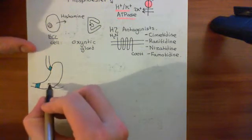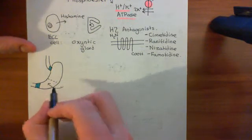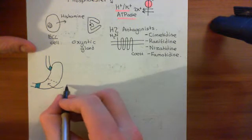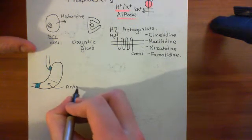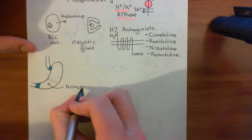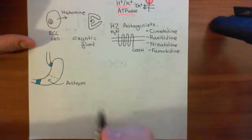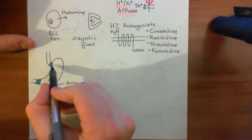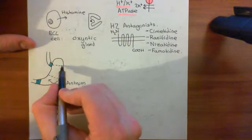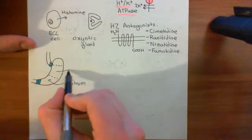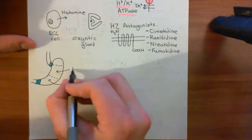Basically, you find that the G cells in the antrum of the stomach can actually secrete gastrin, and this is going to regulate the secretion of hydrochloric acid by the parietal cells, which remember are in the body of the stomach.